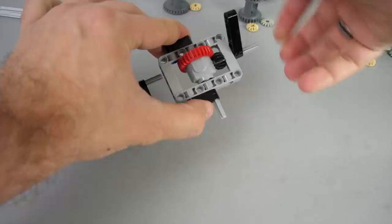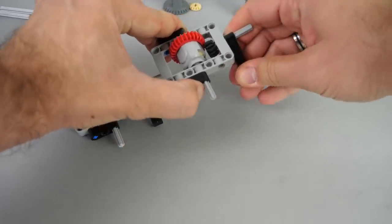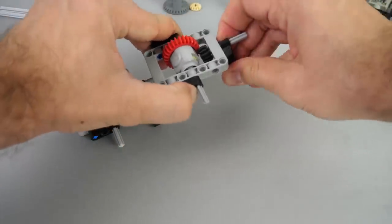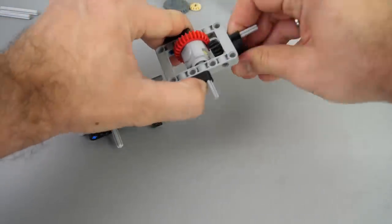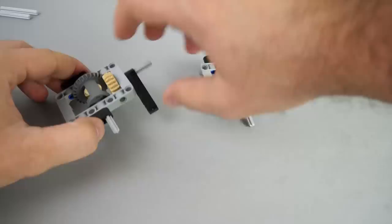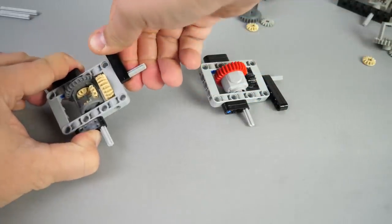Based on my non-scientific approach, both differentials can be forced to slip, but the newer one requires a significantly higher force. With the older version it was possible to force the inner gears to jump out. This won't happen with the new one.